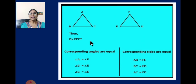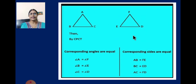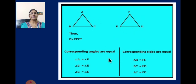By CPCT, when the triangles are congruent, the corresponding angles are equal and corresponding sides are also equal. So we write: angle A is equal to angle F, angle B is equal to angle E, angle C is equal to angle D. Similarly, the corresponding sides are also equal: AB is equal to FE, BC is equal to ED, and AC is equal to FD. This is how we find out all the corresponding parts.